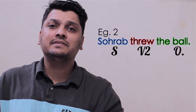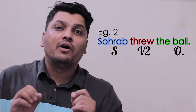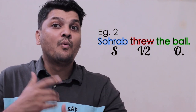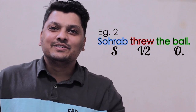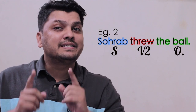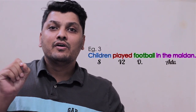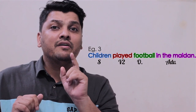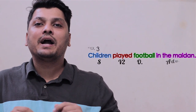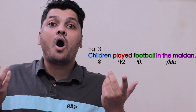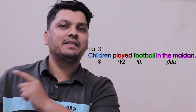Second example of simple past tense: Saurabh threw the ball. 'Threw' is in V2 form. Who threw? Saurabh. Threw what? The ball — here we get the object. So we have subject plus verb in the second form plus object. Third example: Children played football in the maidan. 'Played' is in V2 form. Who played? Children. Played what? Football — object. Where? In the maidan — adverb.